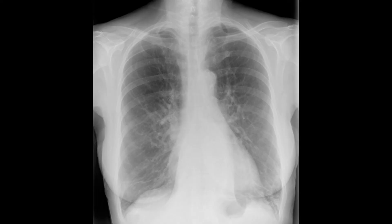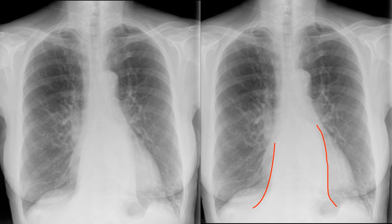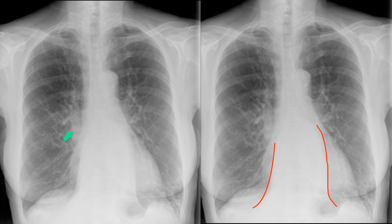This is a patient with bilateral lower lobe collapse. You can see the interface of the collapsed left lower lobe clearly seen against the hyper-expanded left upper lobe. The same is true on the right hand side — here is the interface of the collapsed right lower lobe adjacent to the middle lobe and the upper lobe, which are hyper-expanded. Note that there is no real shift in the hila relatively because both lobes are collapsed.